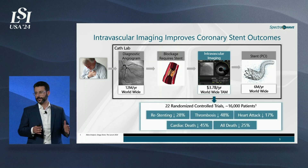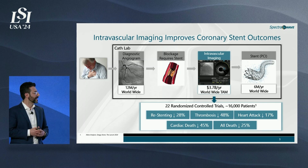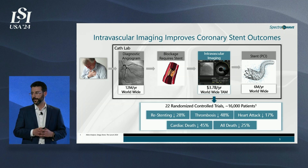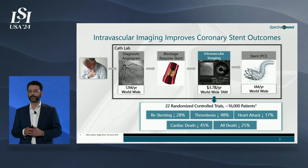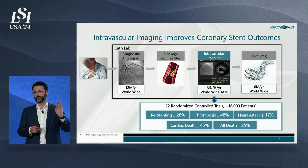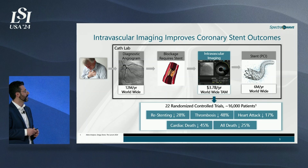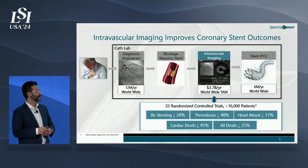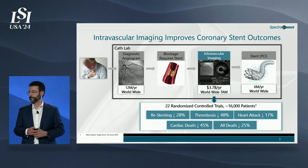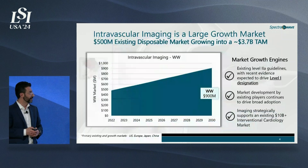The data supporting the use of intravascular imaging to improve outcomes for patients indicated for stenting is unequivocal. A recent meta-analysis covered over 22 randomized controlled trials comparing patient outcomes with angiography plus imaging versus angiography alone. Results show hard outcomes like re-stenting thrombosis down by 48 percent, all the way to reductions in all-cause mortality when intravascular imaging is used to optimize stent placement.